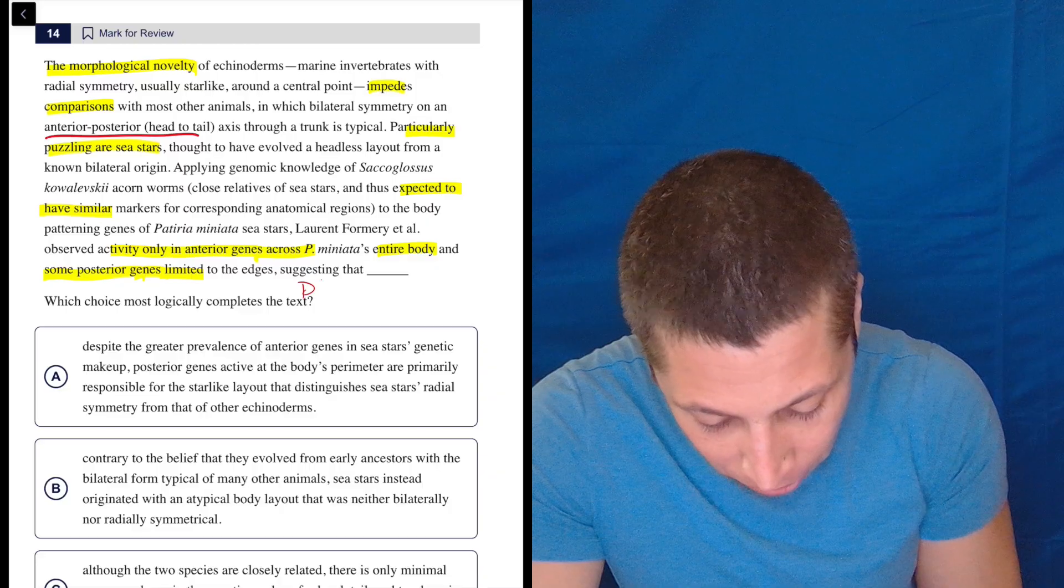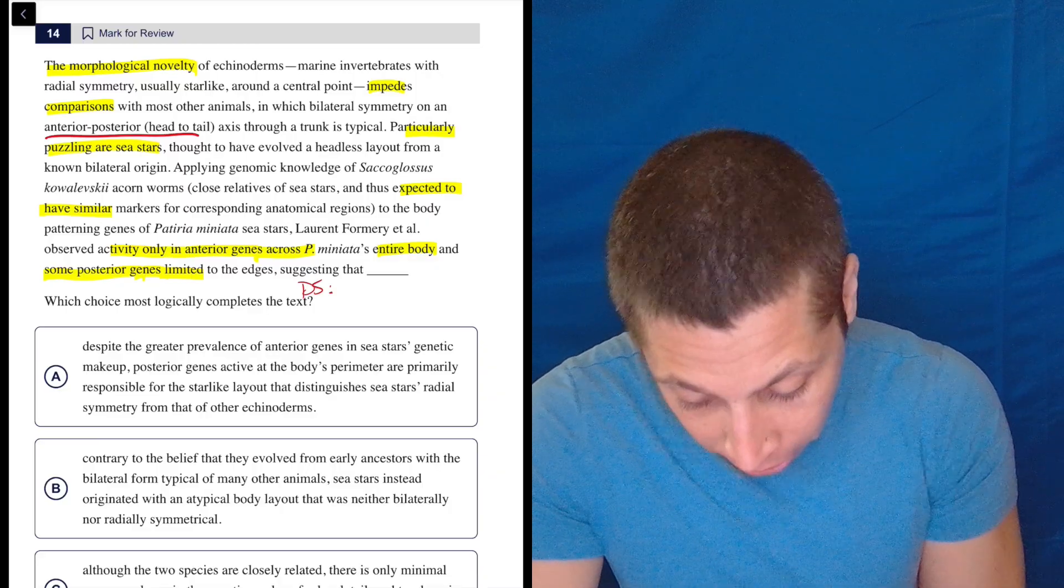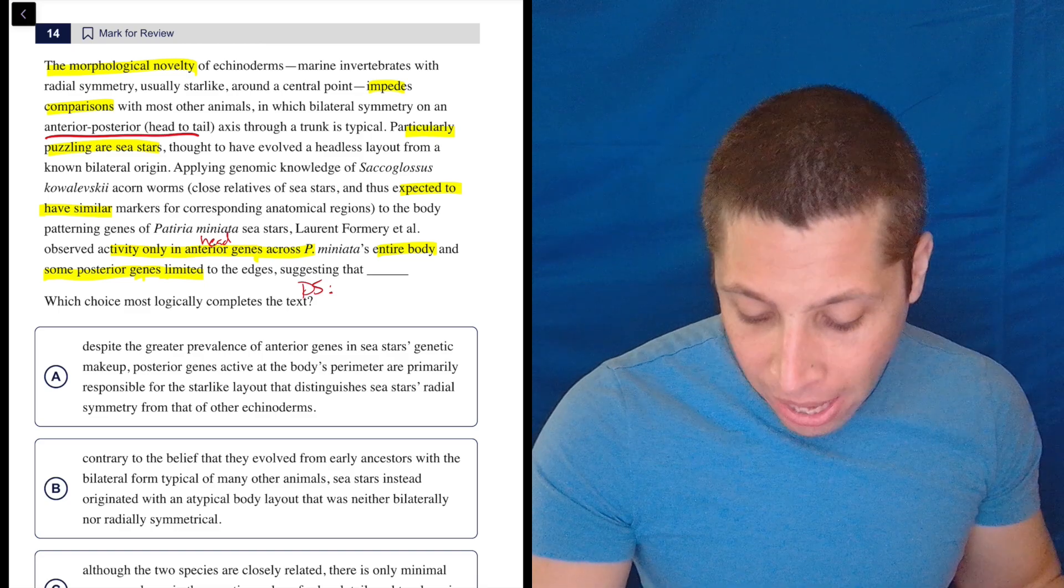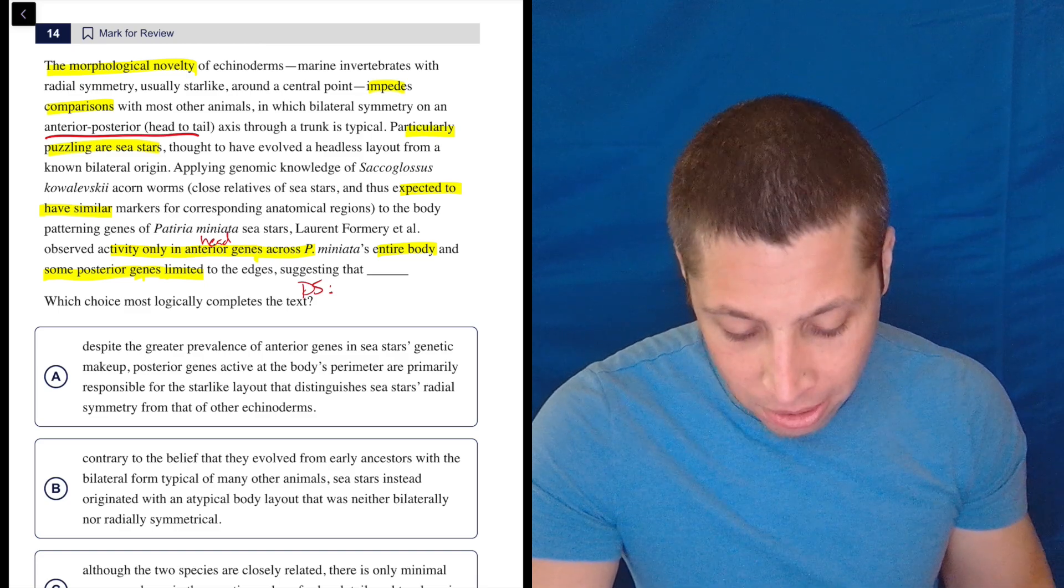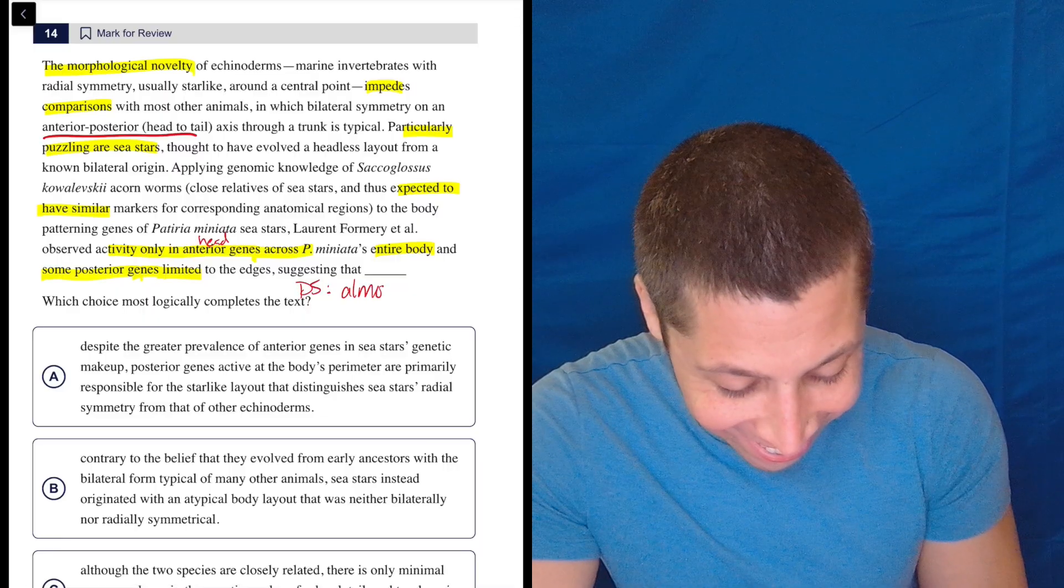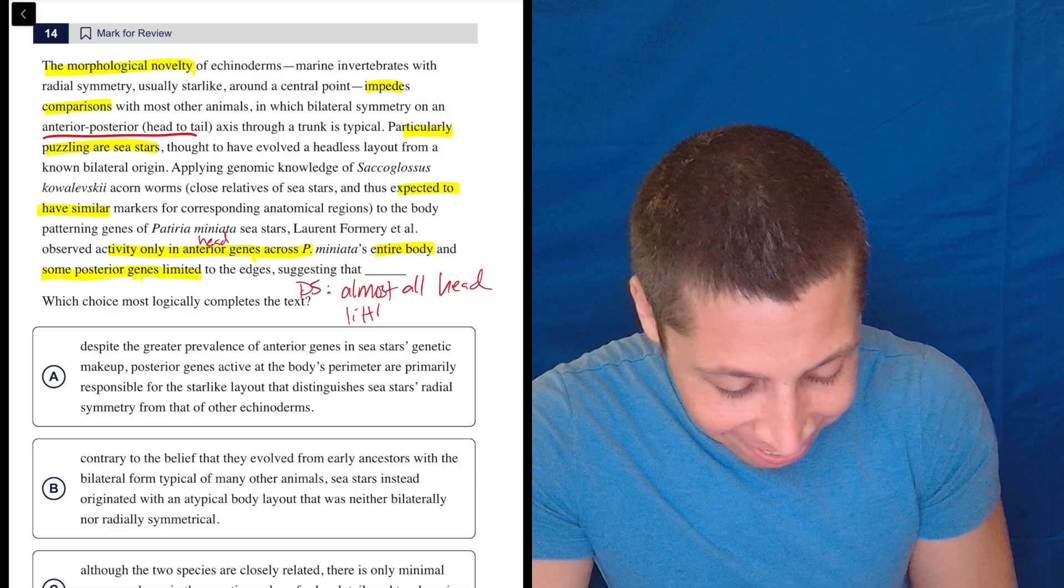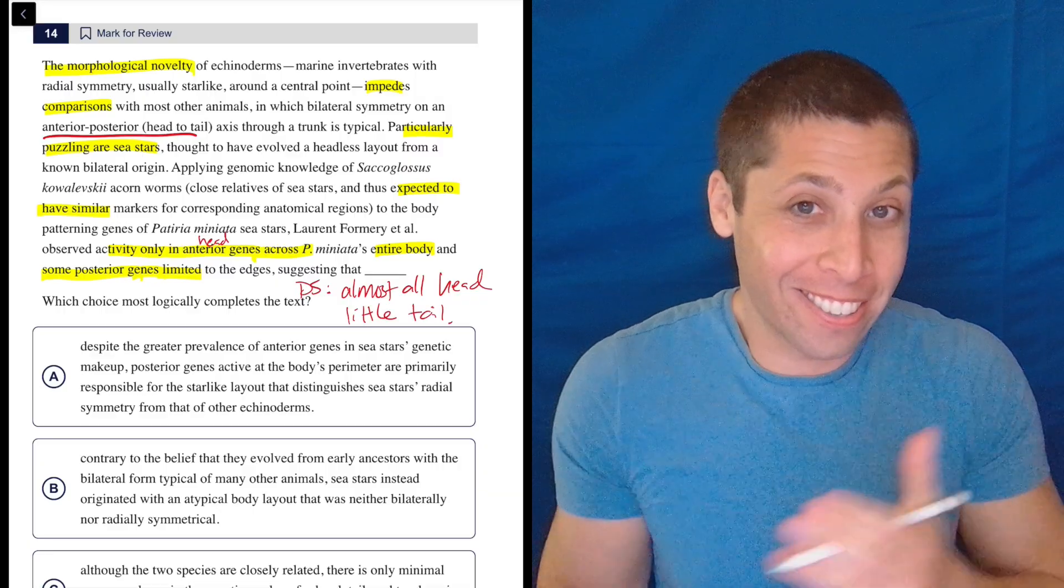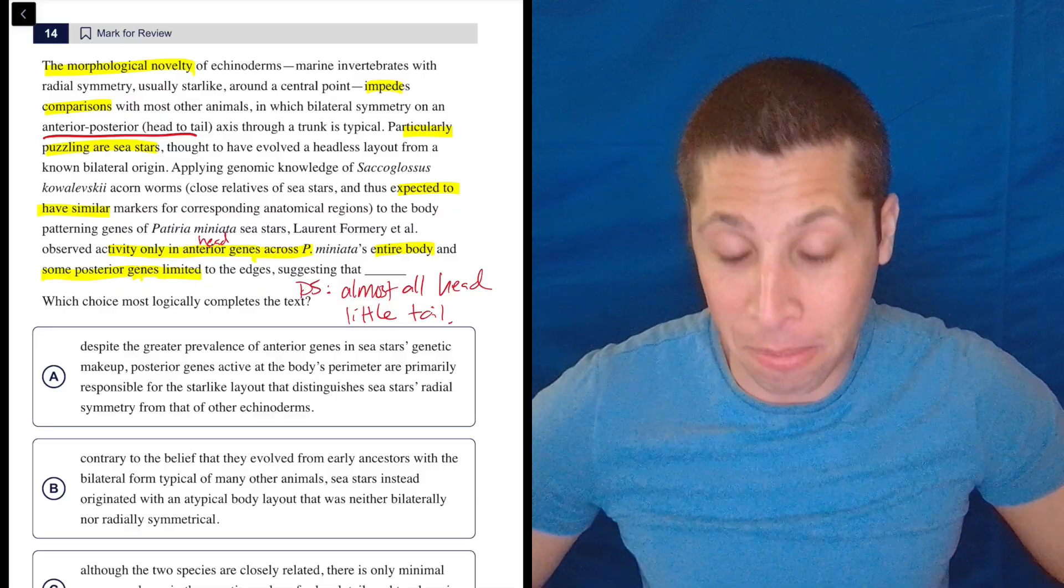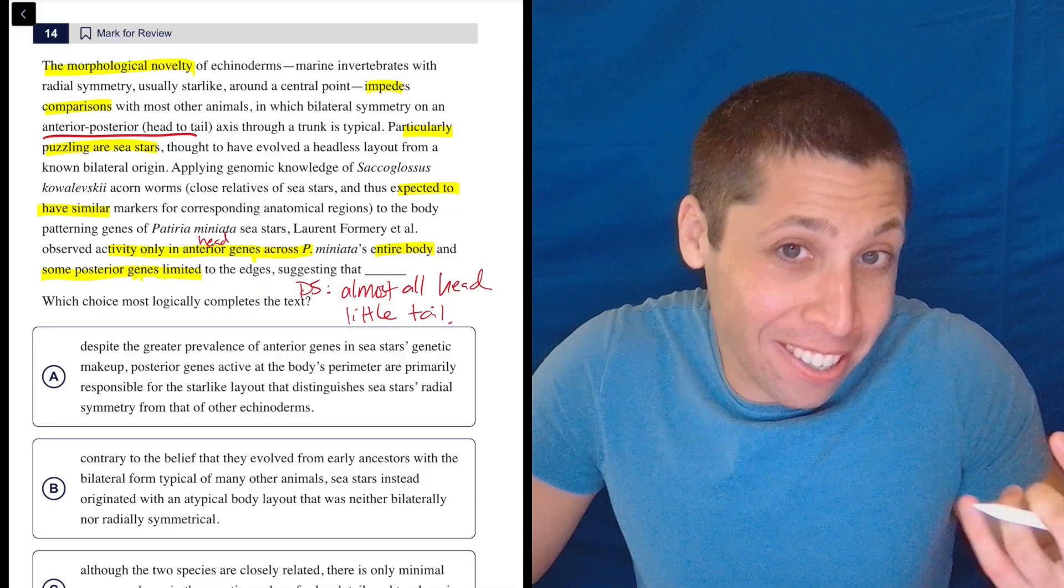So what's my dumb summary here? Something like these things have anterior or head genes over their entire body, and some posterior or tail genes limited to the edges. So these are almost all head, is what a sea star is. Little tail. Okay? That's what I get, right? They're almost all head and very little tail. That's the dumb summary. So let's see. Let's see if that kind of sounds like that.